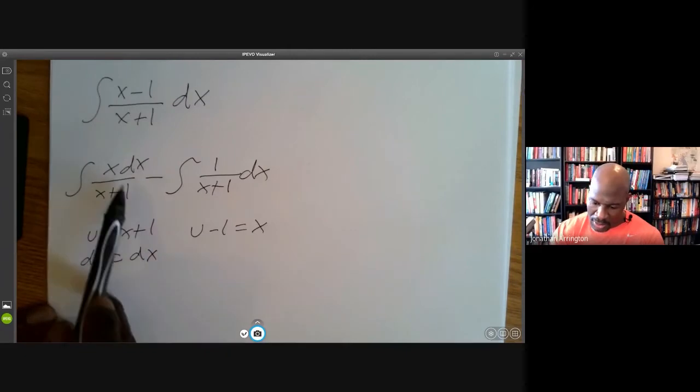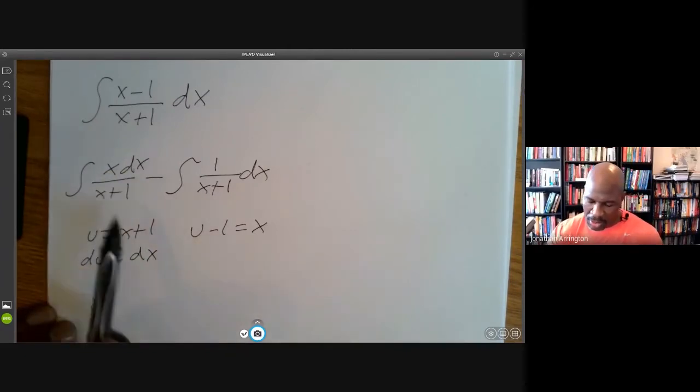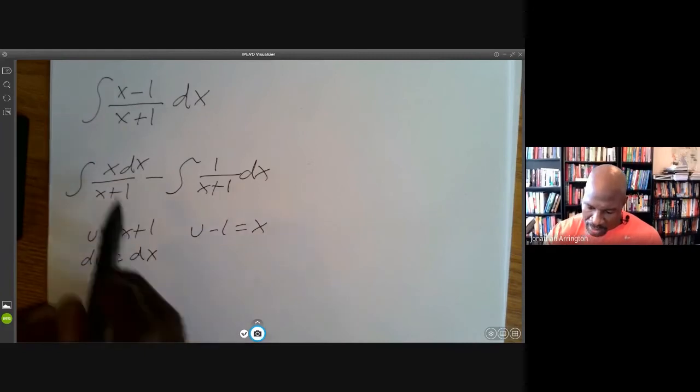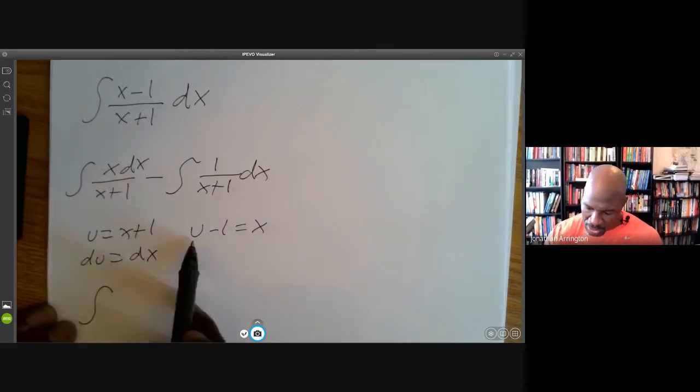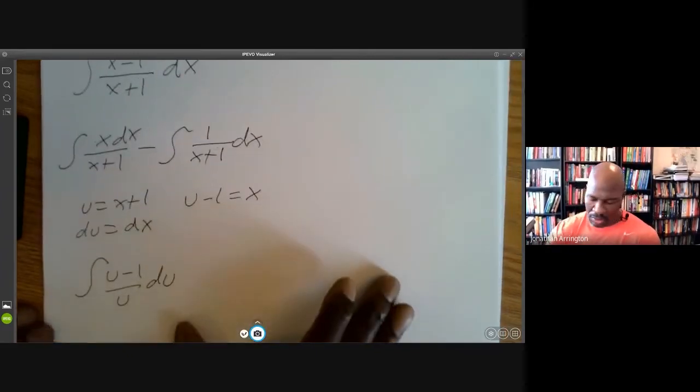When I do this substitution, x dx is (u-1) du, so u-1, and I'll put the du later. And my denominator is simply u. So this is what I'm integrating.